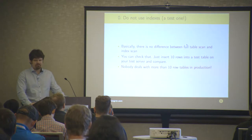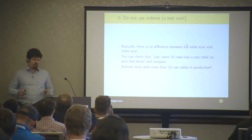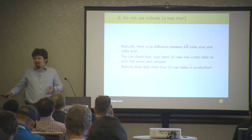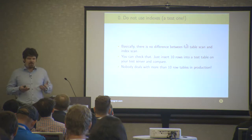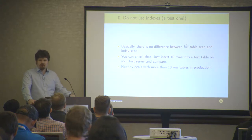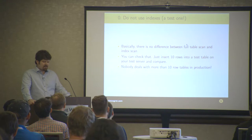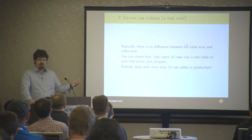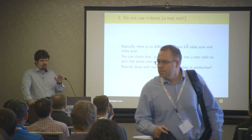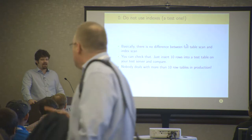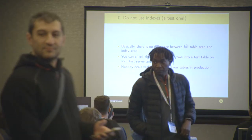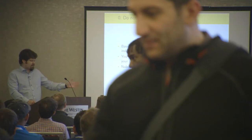Let's see an example. The example is very simple: do not use indexes. That's a good example of a worst practice. Basically, full table scan versus index scan — why were those indexes invented? It's a really stupid thing. You can insert just a few rows on your non-production environment, on your laptop, see that full scan and index scan are basically the same. Most likely you'll need to hint your optimizer to do the index scan. But who cares? Nobody deals with more than 10 rows in production anyway. Just do that.